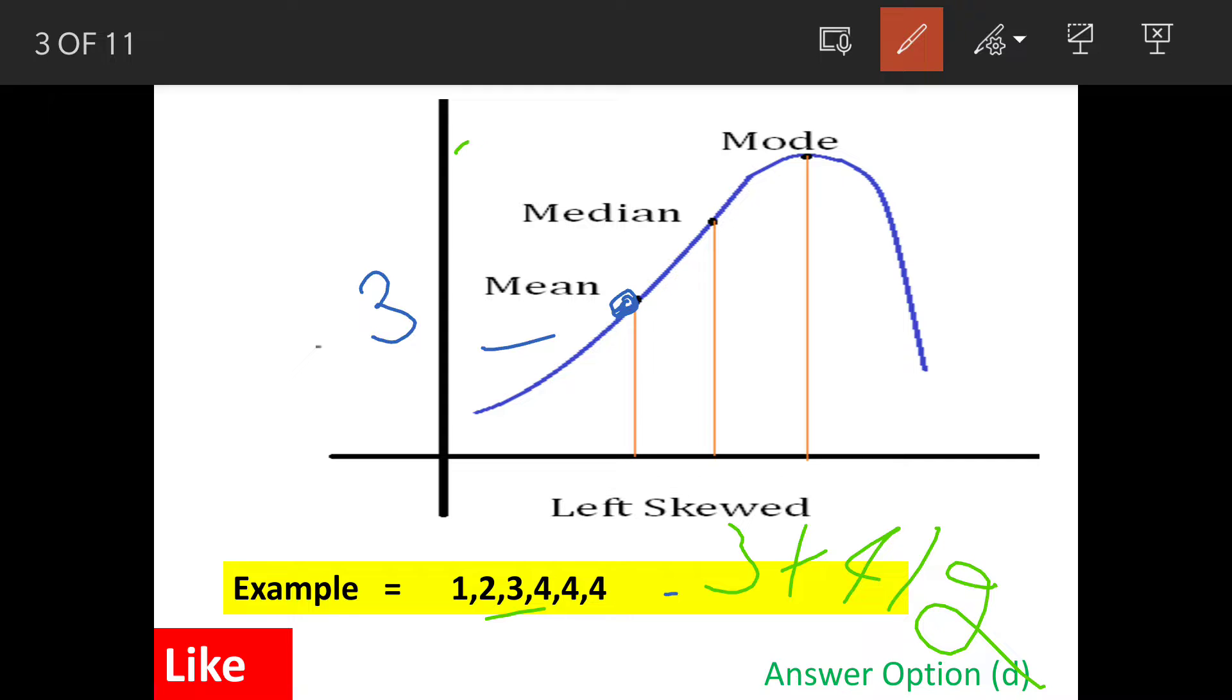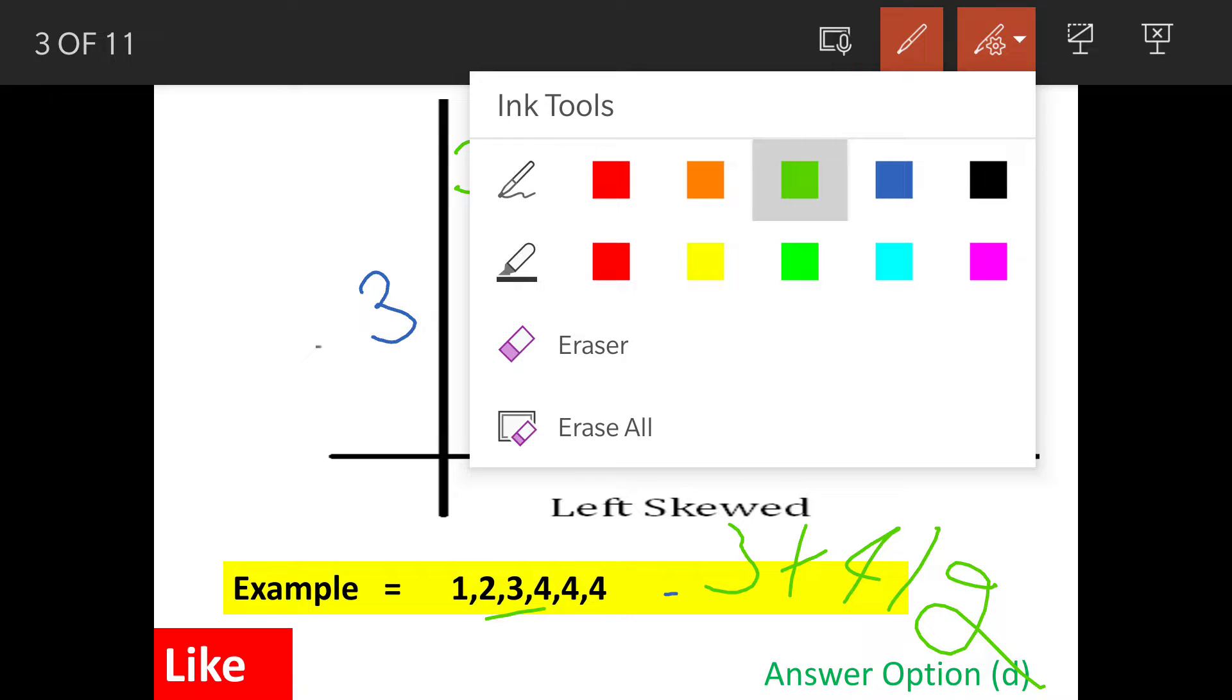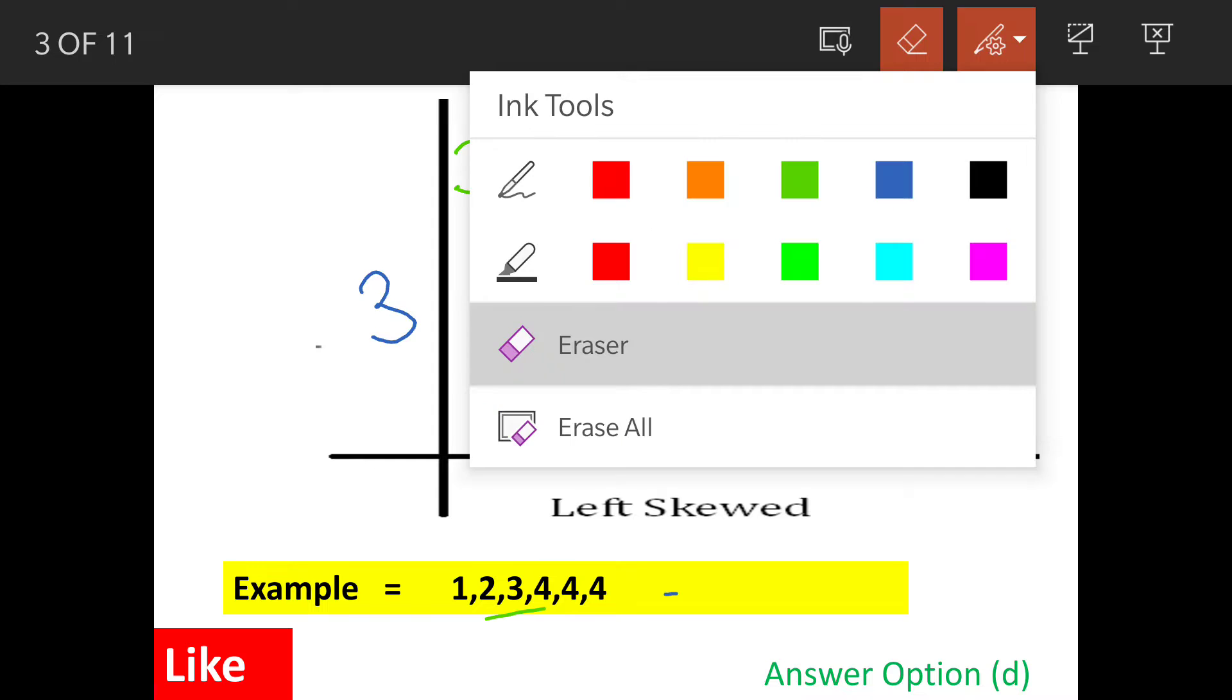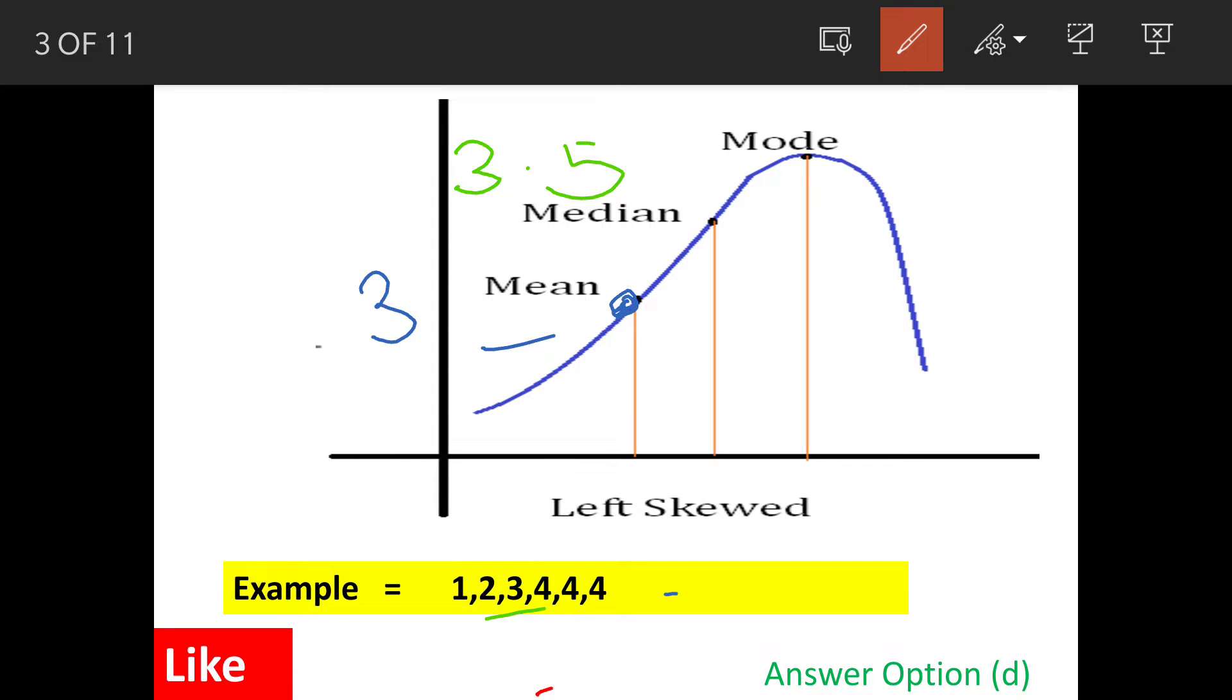And mode is the number which is occurring most. Which is that number? That number is 4. The mode is 4.